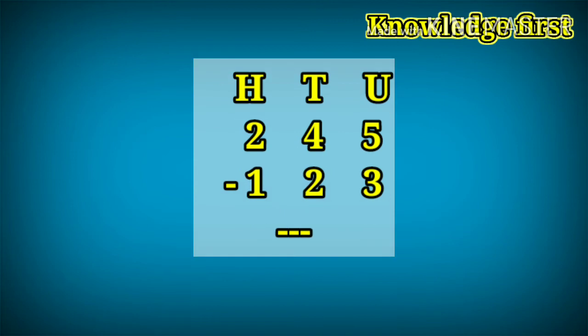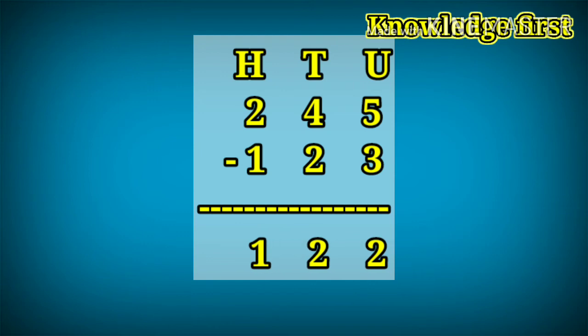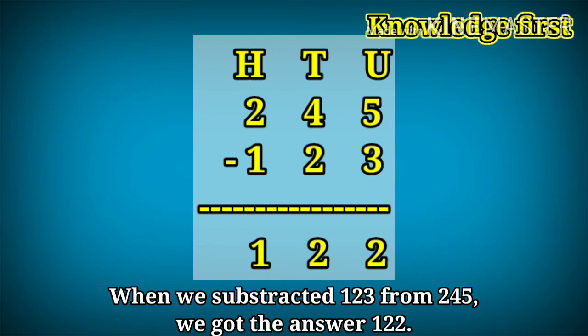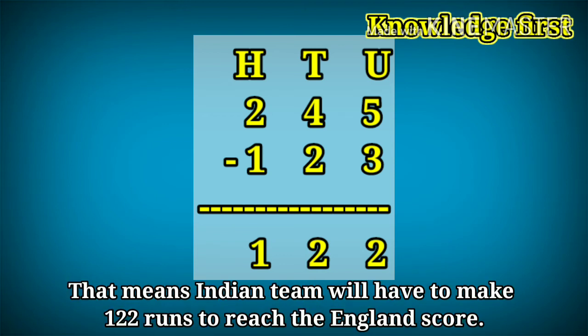245 minus 123. Start the subtraction from unit place. 5 minus 3 is equal to 2. Then tens place, 4 minus 2 is equal to 2. And then hundreds place, 2 minus 1 is equal to 1. When we subtracted 123 from 245, we got the answer 122. That means Indian team will have to make 122 runs to reach the England score.